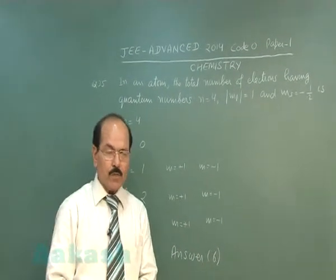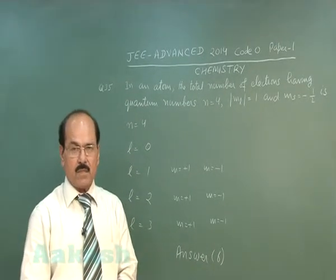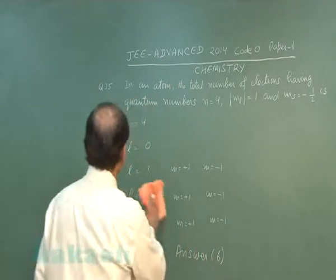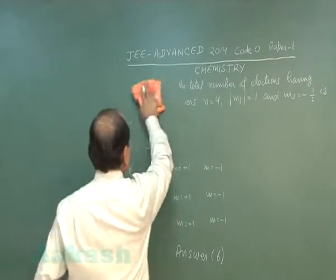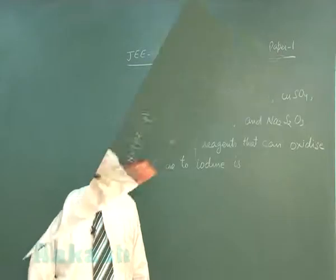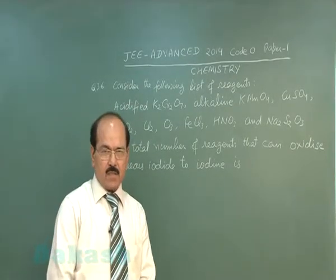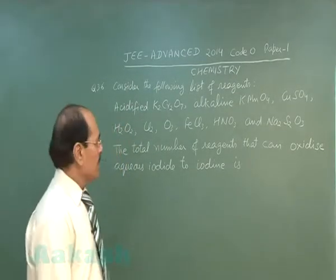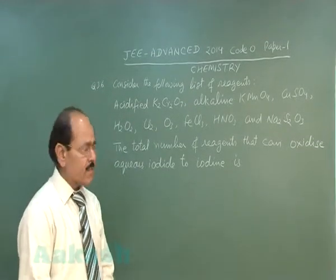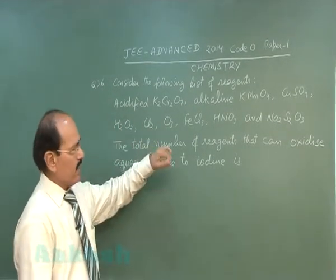We now move on to question number 36. Question number 36 of the paper reads: consider the following list of reagents — acidified K₂Cr₂O₇, alkaline KMnO₄,